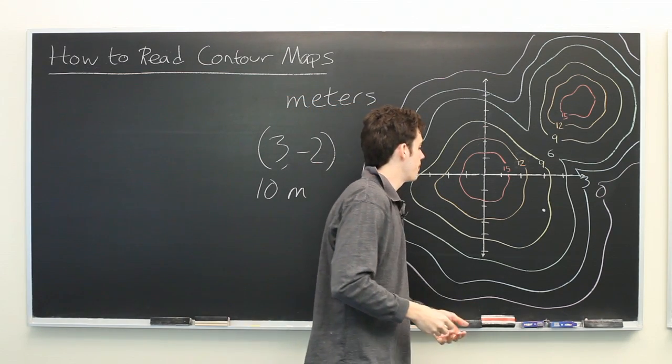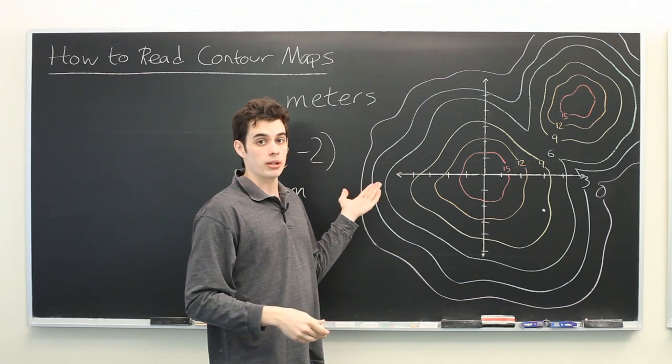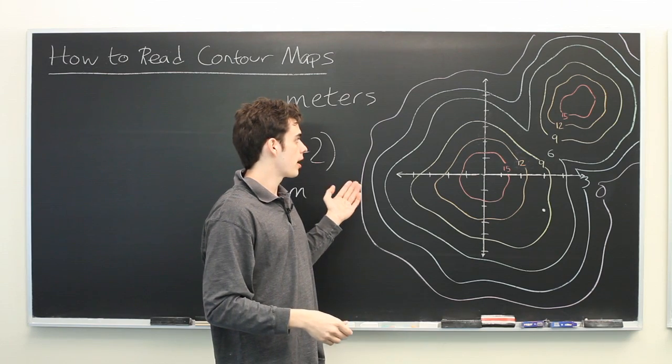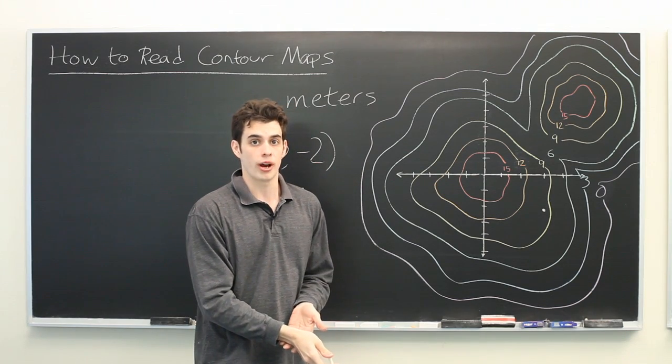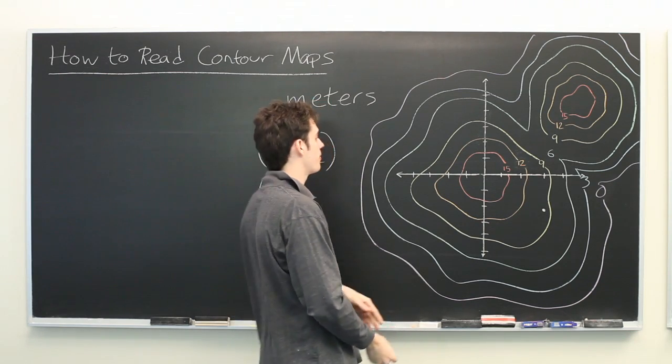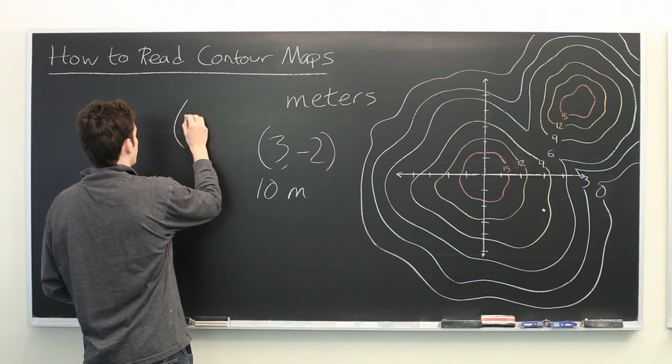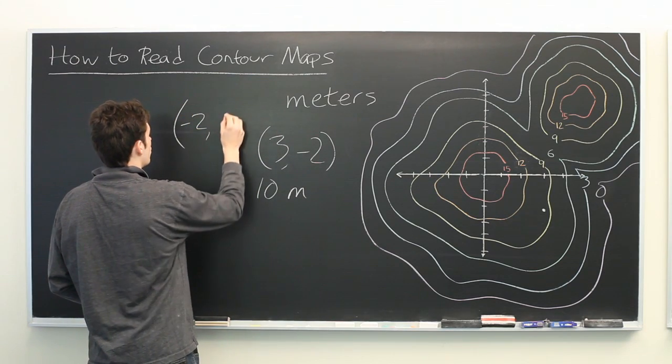Another natural question is, if you are given a point, as we did before, in which direction should you travel in order to move downhill? Let's say we're given the point negative 2, 3.